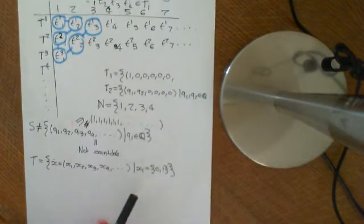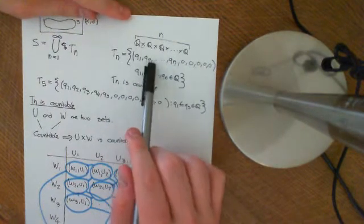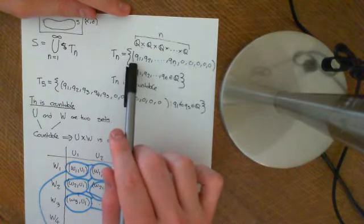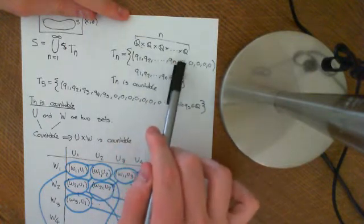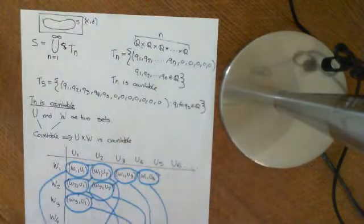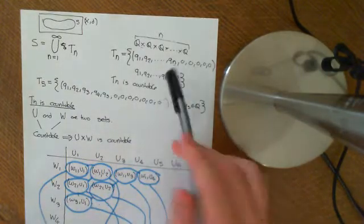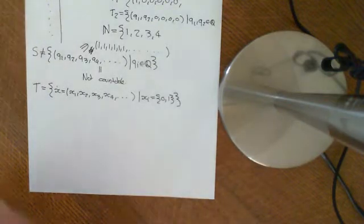For complex LP spaces, you will have to alter these TNs slightly, and you'll have to alter your S. The TNs, instead of taking rational numbers, will have to take Gaussian numbers. A Gaussian number is a complex number where both the real and imaginary components are rational numbers. So you'll have to take sequences of Gaussian numbers up to the nth term and then zeros afterwards, and let S be the union of all of those. These TNs will be countable by very similar arguments, because Gaussian numbers are countable. We'll go over this again at the end of the video where we generalise to complex LP spaces.